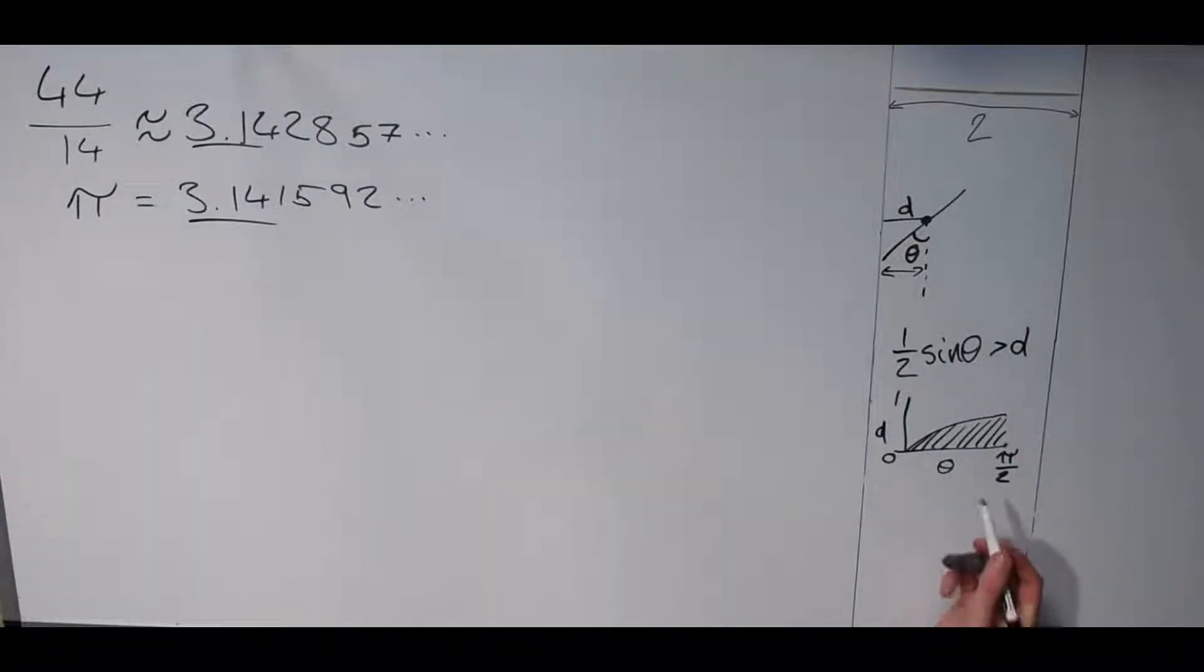To find the probability of the needle crossing the line, you just want the area under the curve divided by the total area of all the possibilities.